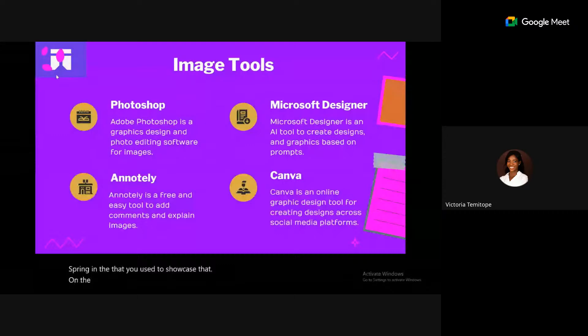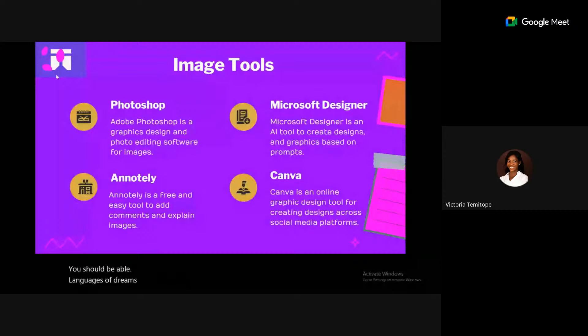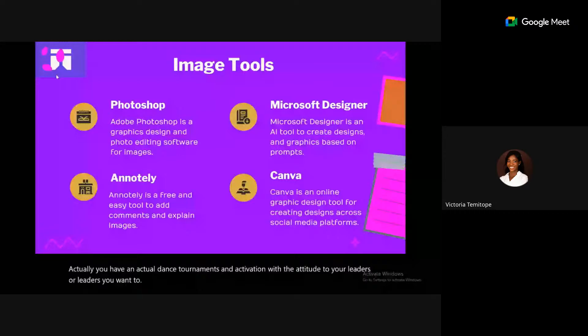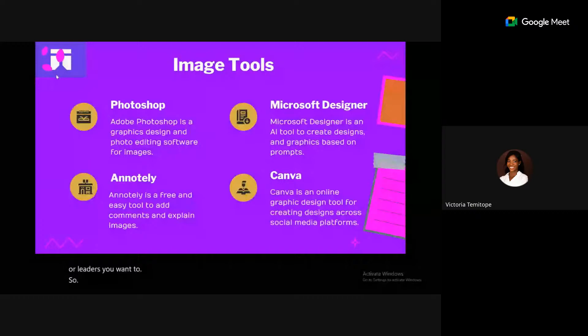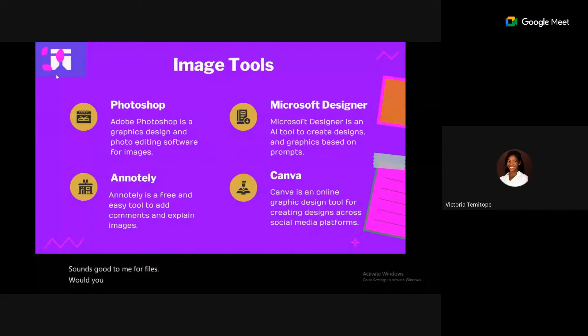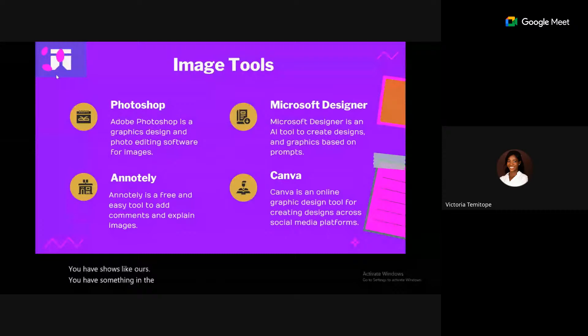Photoshop is a complex tool useful for those familiar with the Adobe family. Annotly at annotly.com lets you annotate screenshots — add arrows, numbers, or blur parts of an image you don't want visible, such as tabs in a screenshot. It's great for pointing out specific details to your readers.